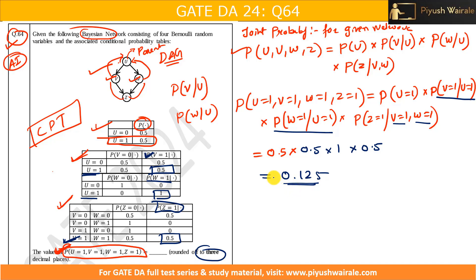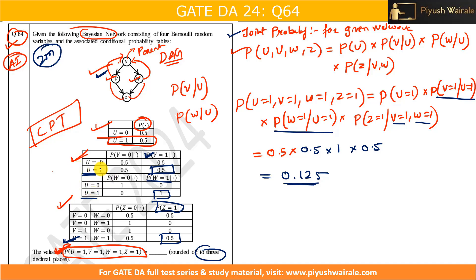This question was asked for two marks. If you understand this diagram and how to find the joint probability for a given network, that is sufficient. In some cases they may give only partial data, and you have to find the remaining value using one minus that probability — as discussed in the first video. You just need to apply the formula and put the values. Simple question for two marks.